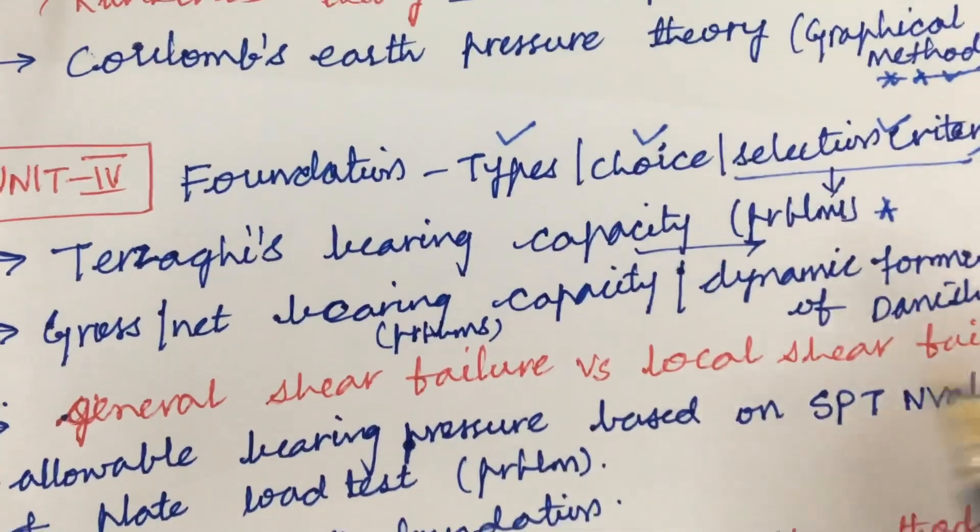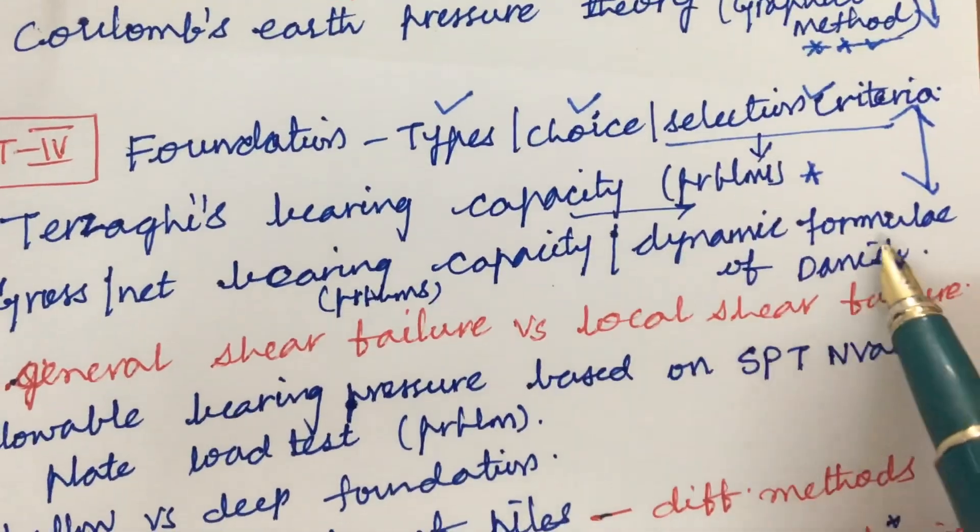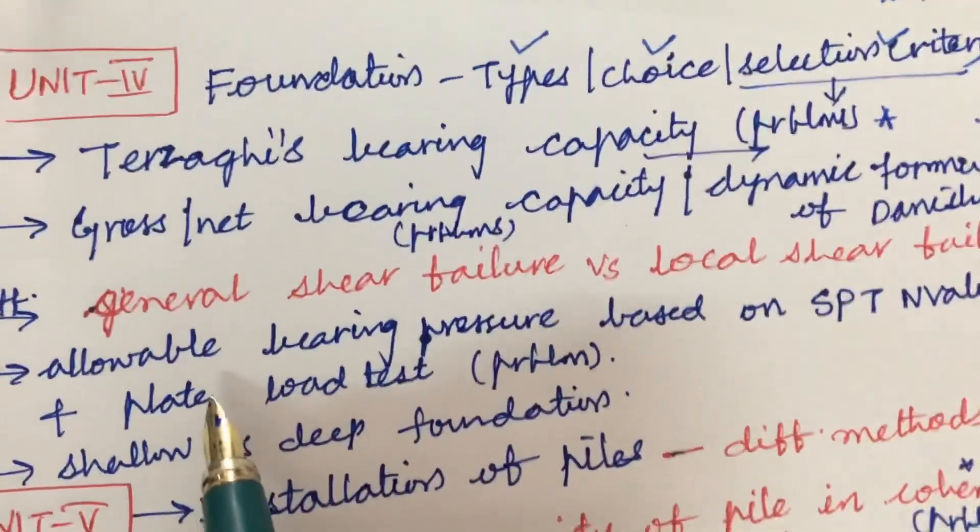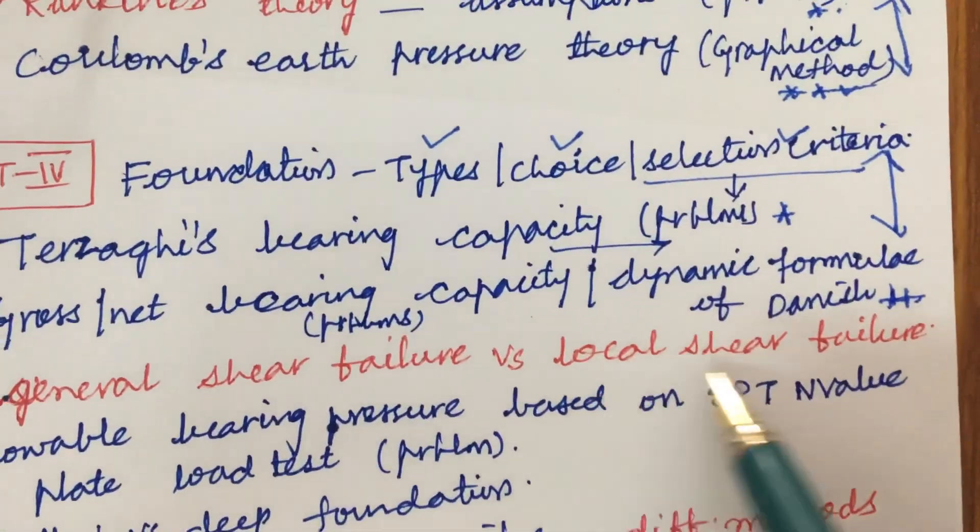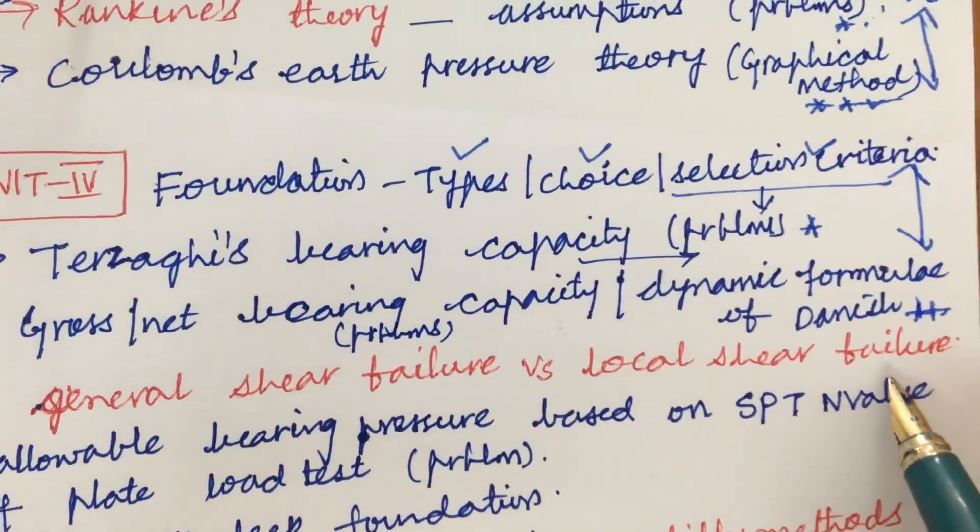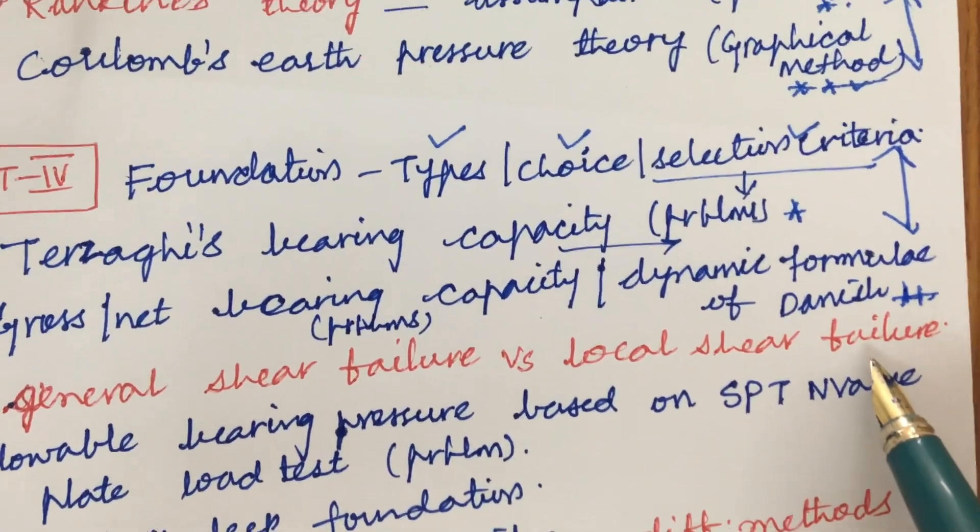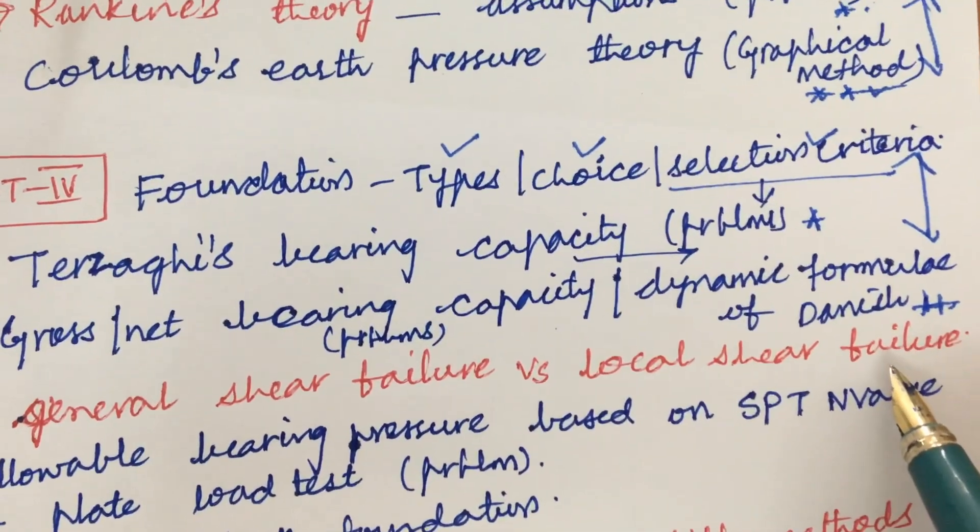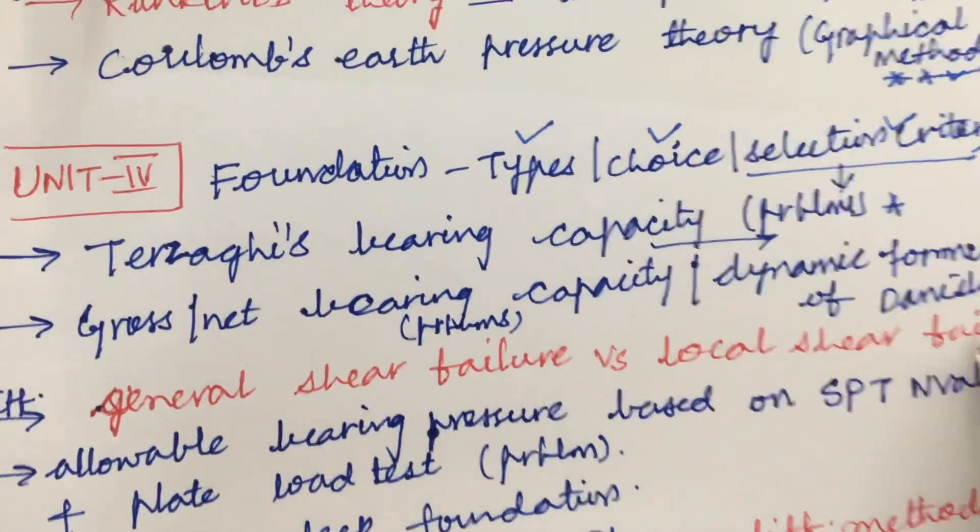Later, gross or net bearing capacity problems as well as dynamic formulae for Danish - these all are just five mark questions. Later, differentiate between the general shear failure versus local shear failure. Dear students, this is a scoring subject. It is a part of problems as well as theory. How to write a theory paper I have uploaded a video in this channel - please go through it and work out and write accordingly and score better marks.